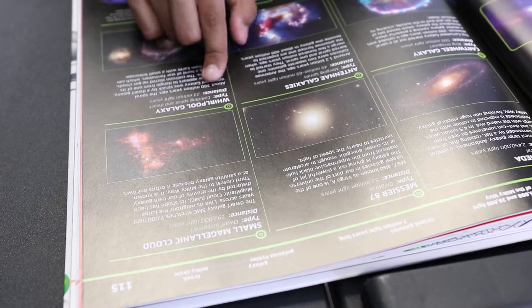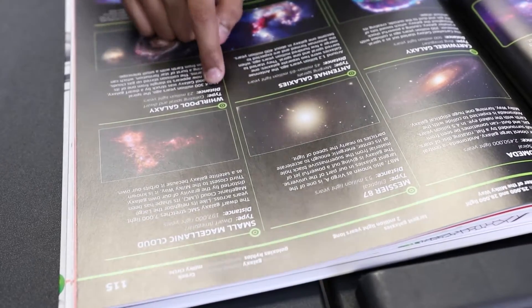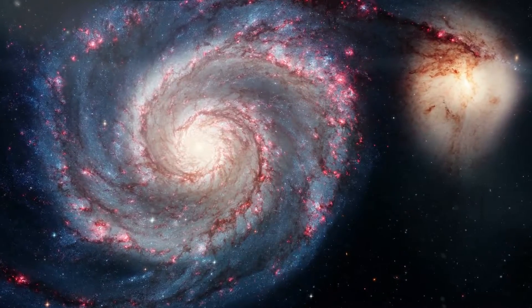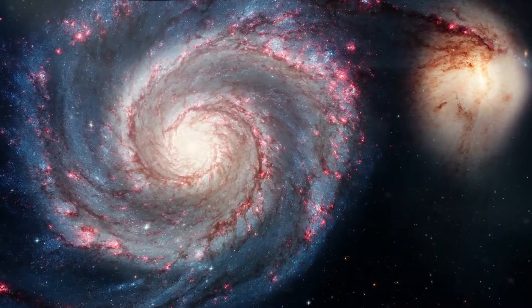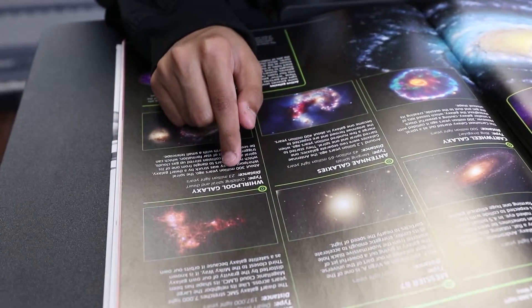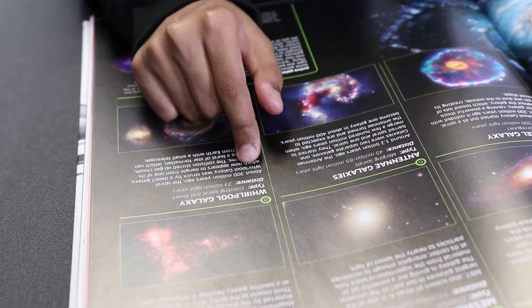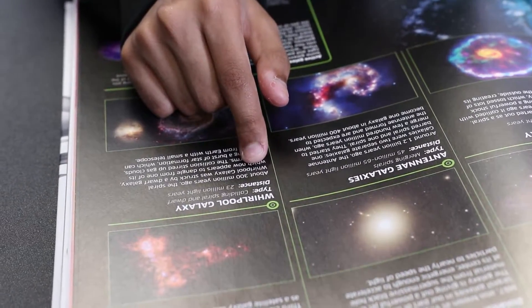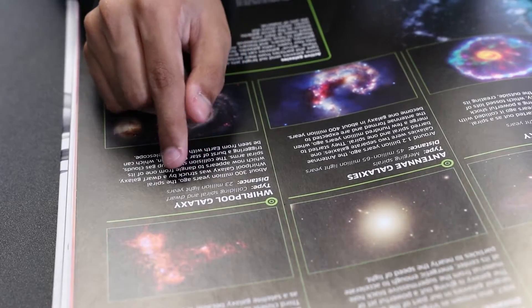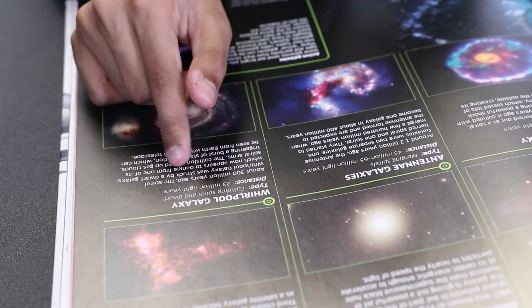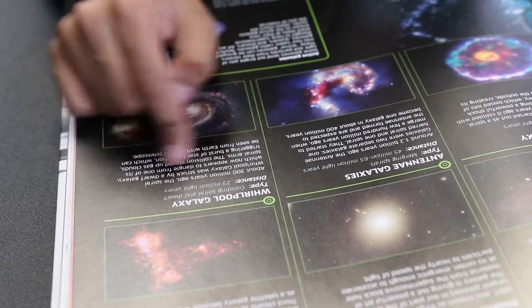And this is the Whirlpool galaxy. It is a type of colliding spiral and dwarf galaxy at 25 million light years away from us. About 300 million years ago, the spiral Whirlpool galaxy was struck by a dwarf galaxy.